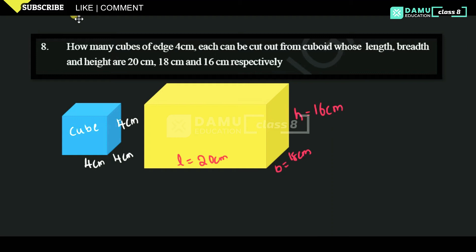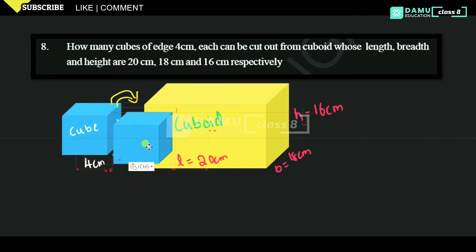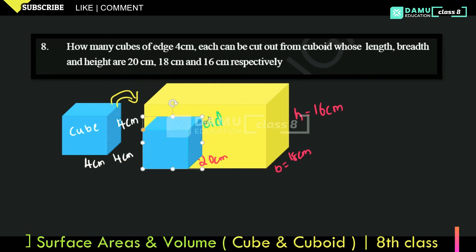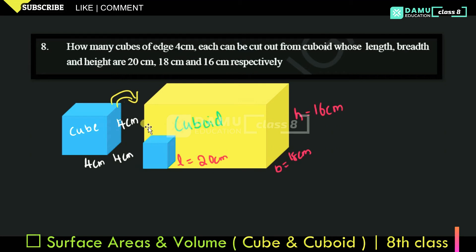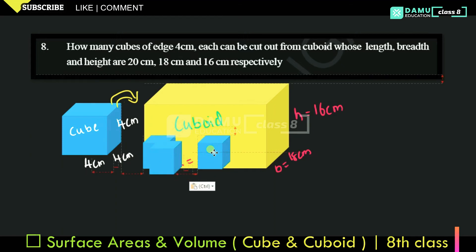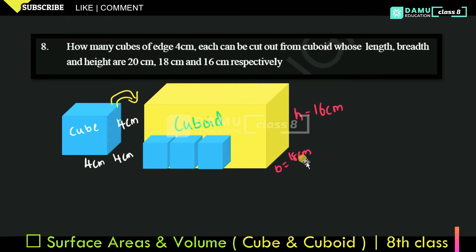So how many cubes can you make from this cuboid? You can make cubes like this, joining different cubes continuously, and fill up the cuboid completely. So if you add all these cubes' volumes, it will coincide with the cuboid volume.